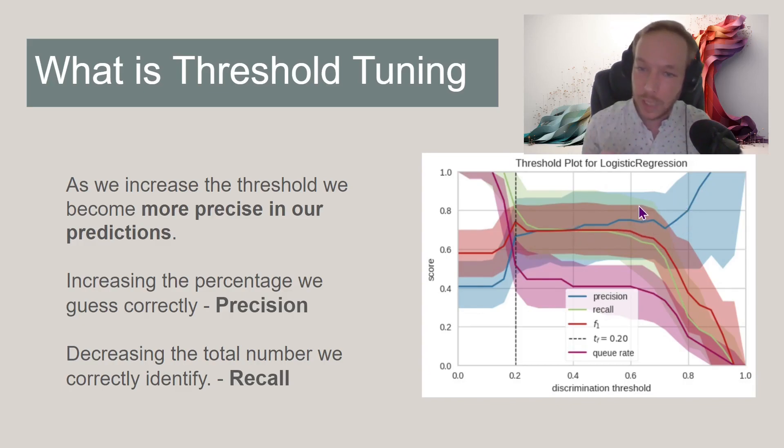But at the sacrifice, as we become more confident of predictions, we're going to be making less, and then overall, we're going to be getting less of our predictions. So this green line right here is the recall. So as our precision goes up, the recall goes down.